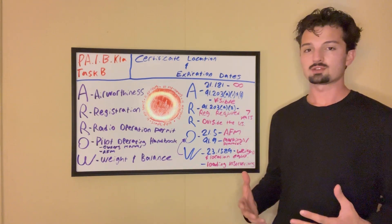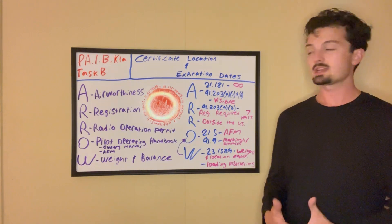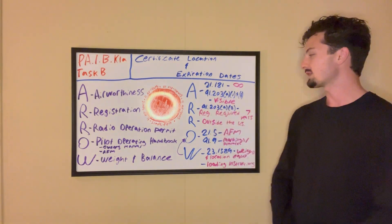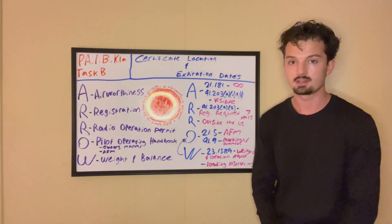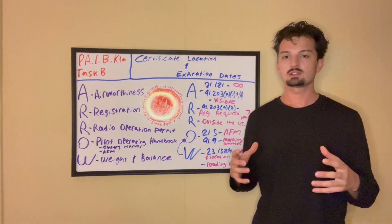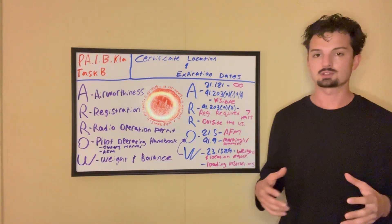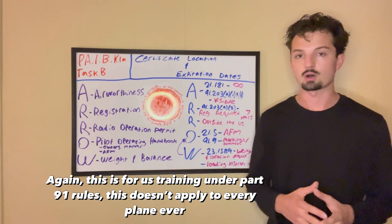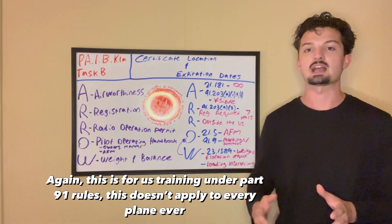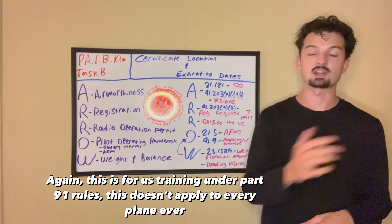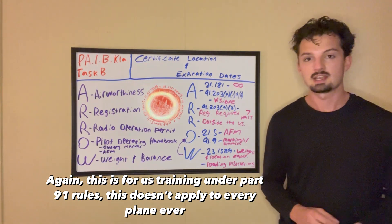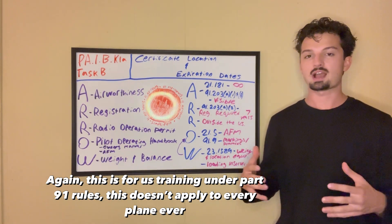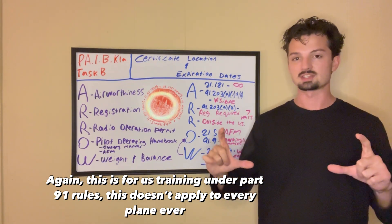The next regulation for airworthiness worth noting is 91-203-Alpha-1 and Bravo. And this regulation essentially states that the airworthiness certificate has to be visible to all passengers that enter the plane. You can't have the airworthiness certificate just stuffed in the baggage compartment. It has to be somewhere that any passenger gets in, they're going to be able to see it.